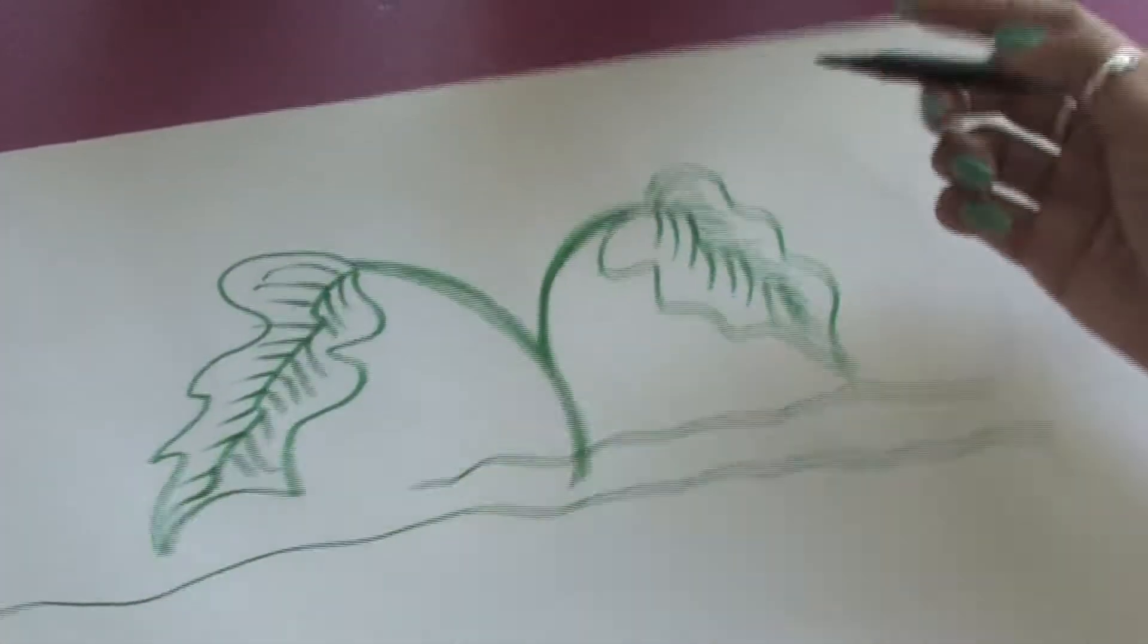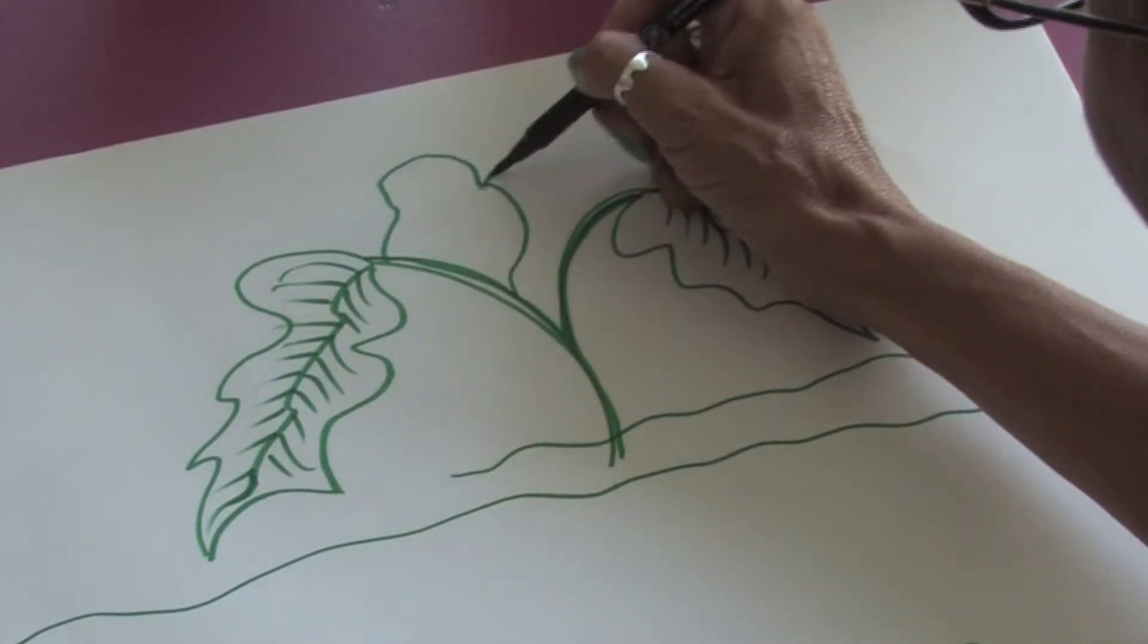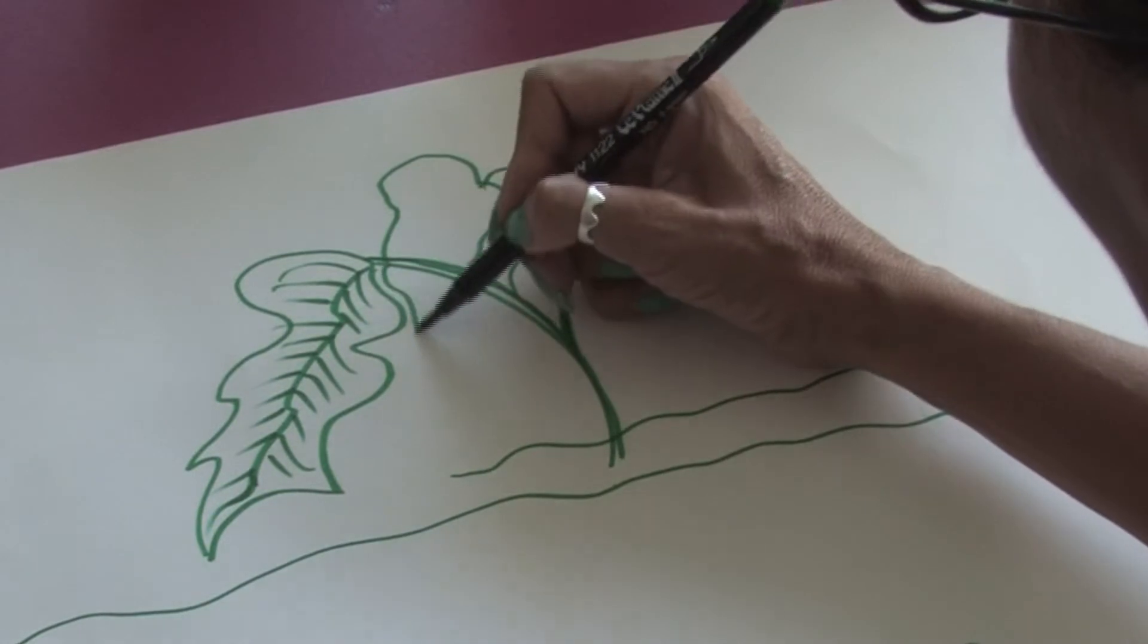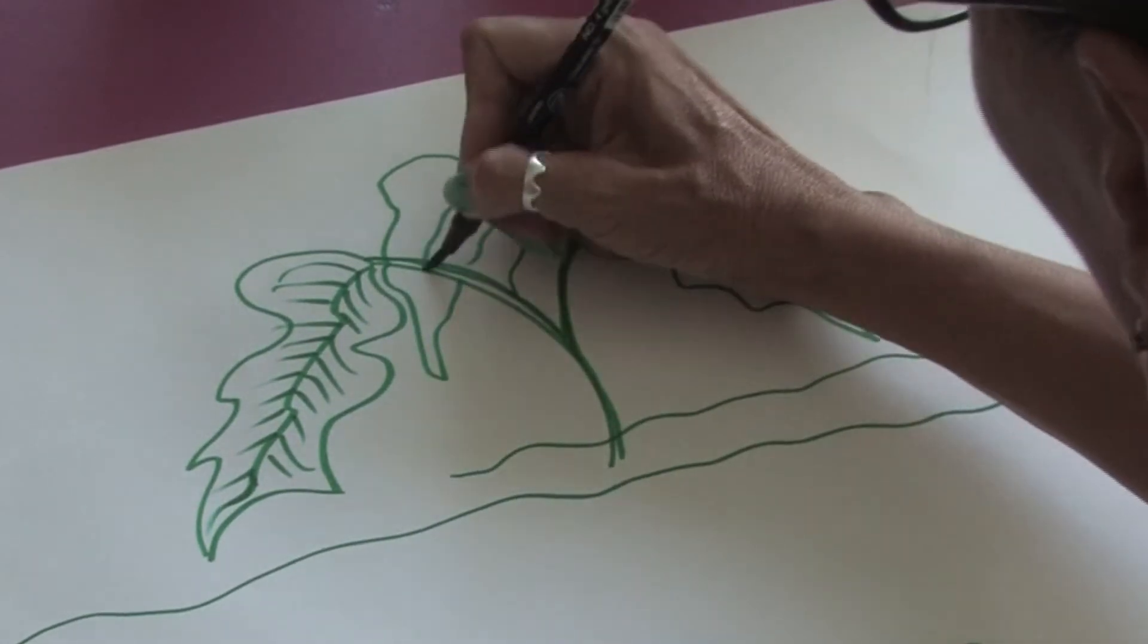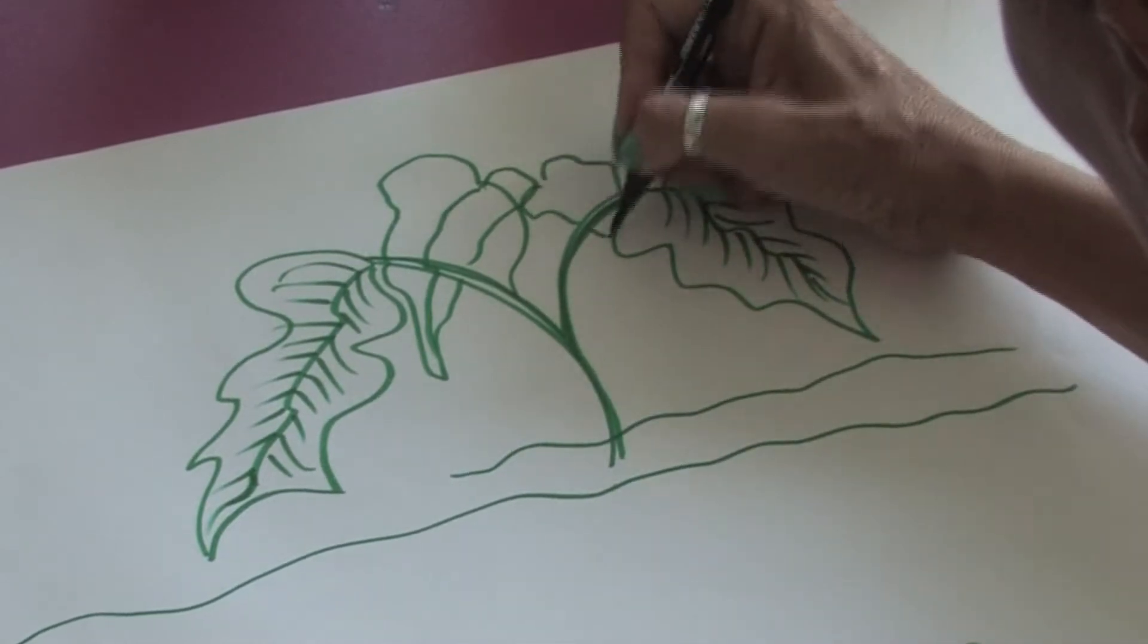And some more lines. Now we're just going to keep on adding leaves in. You can make the plant as bushy as you like. Just keep adding in more leaves.